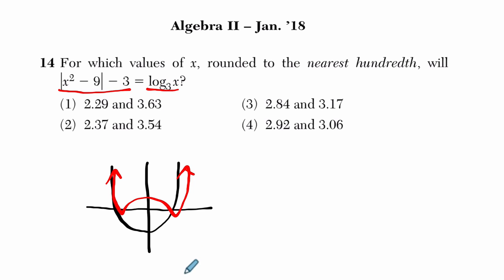And then log base 3 of x, so it's going to be a logarithmic function, something like this, and I know it's going to cross at the point 1, 0, and that's because if you had log base 3 of 1 equals 0, that means 3 to the 0 is 1. Now here, if I plug in 1 to this function, it's 1 squared, 1 minus 9 is negative 8. Take the absolute value of that, it's positive 8, and 8 minus 3 is 5.